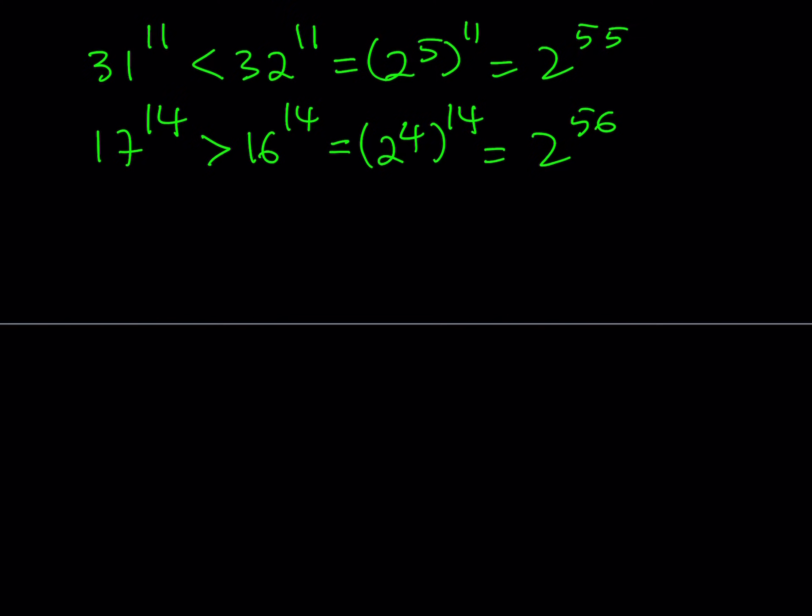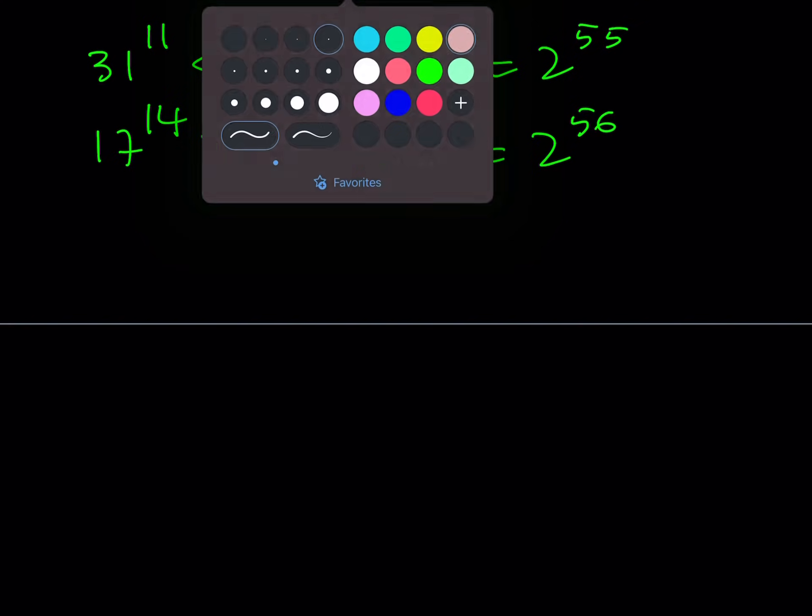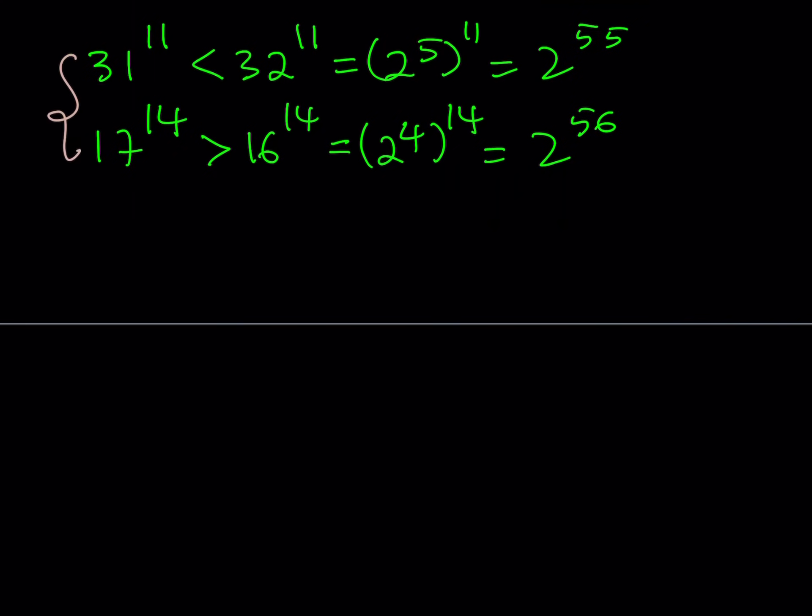So this tells us that 17 to the 14th power is greater than 2 to the 56th. Now our goal is to compare these two numbers. But notice that we ended up with powers of 2. So let's go ahead and start with something and then put this all together. We're going to be getting a chain of equations and inequalities. Now, how can I put this together?